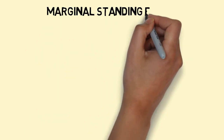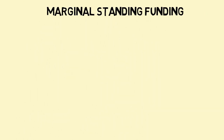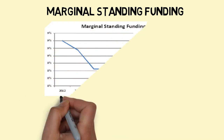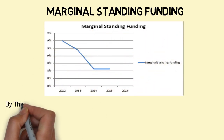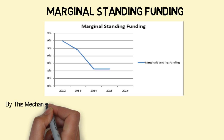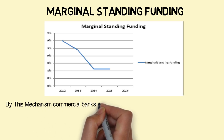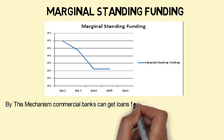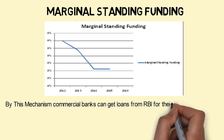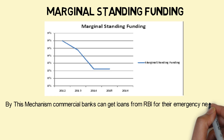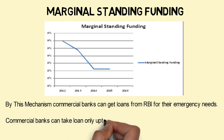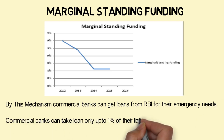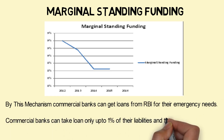The next important tool is Marginal Standing Facility (MSF). By this mechanism, commercial banks can get loans from RBI for their emergency needs. Commercial banks can take loans only up to 1% of their liabilities and time deposits.